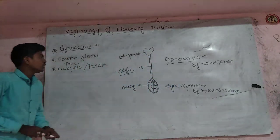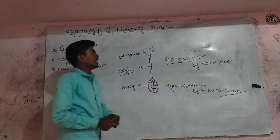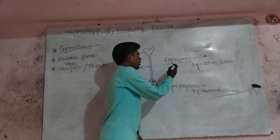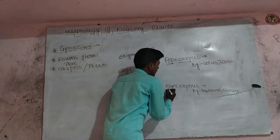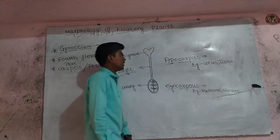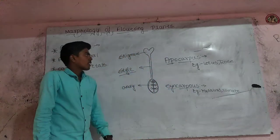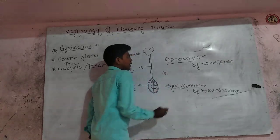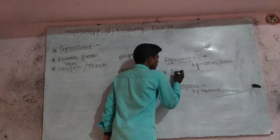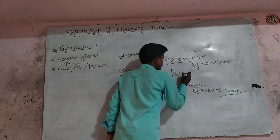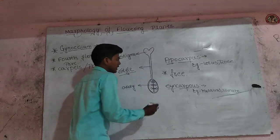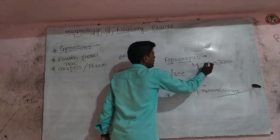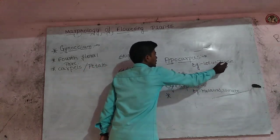In Gynoecium, Carpels are divided into two types: one is Apocarpous, and another is Syncarpous. Apocarpous means the Carpels are free from each other. For example, Lotus and Rose.